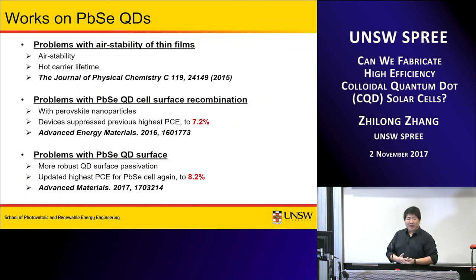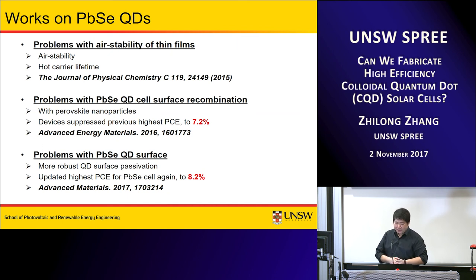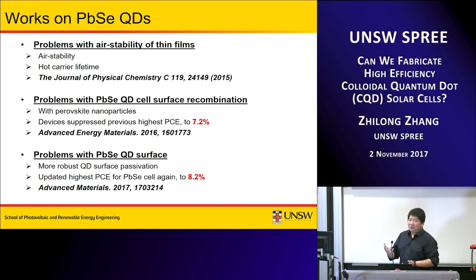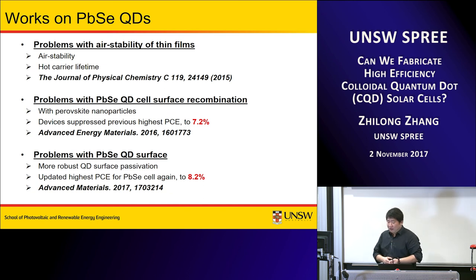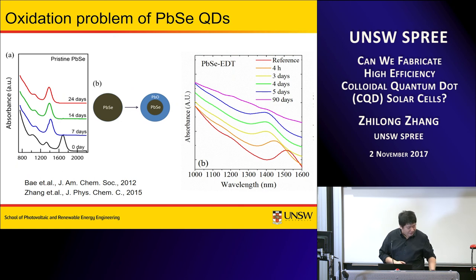During my PhD I spent most of my time on lead selenide and managed to tackle a few problems. The first was solving the air stability problem for lead selenide quantum dot thin films using a ligand surface approach. The second was making lead selenide solar cells and finding a way to reduce surface recombination within the device structure. The third was developing a new passivation method for the material itself. With the second and third works I managed to make solar cells with the highest reported efficiency at that time.